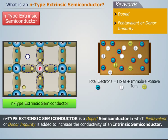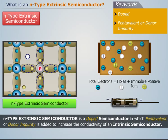Thus, in this semiconductor, the total number of electrons is exactly equal to the sum of the total number of holes and immobile positive ions, so the negative charge is exactly balanced by the positive charge.